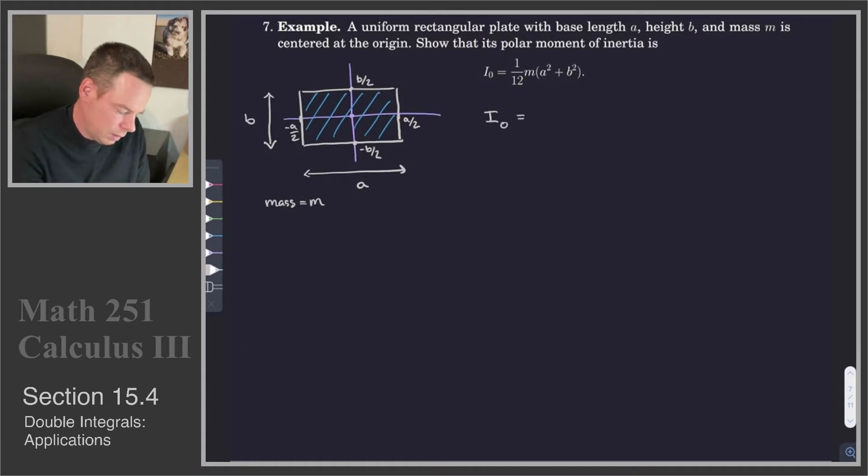What is our polar moment of inertia? That's given by I sub Z or I sub 0. So I sub 0 is given by the integral over the region, I'll just write it down as the integral over the region R, which is that rectangle, of (x² + y²) times the density.